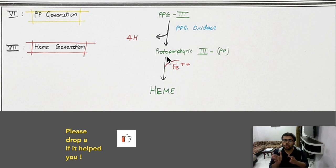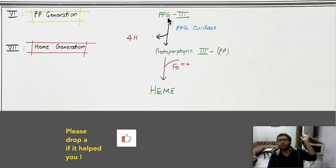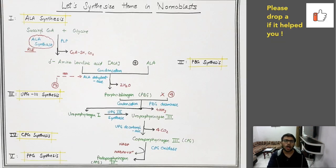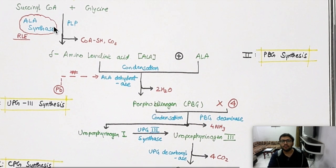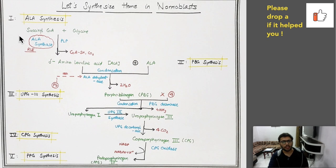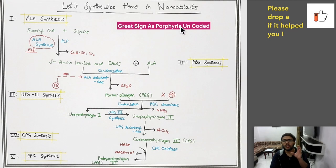Protoporphyrin combines with iron to form heme. Before protoporphyrin, there is protoporphyrinogen — 'gen' means something that generates a particular thing. So protoporphyrinogen precedes protoporphyrin. Now let's look at the full heme synthesis pathway and the mnemonic I've made for you.